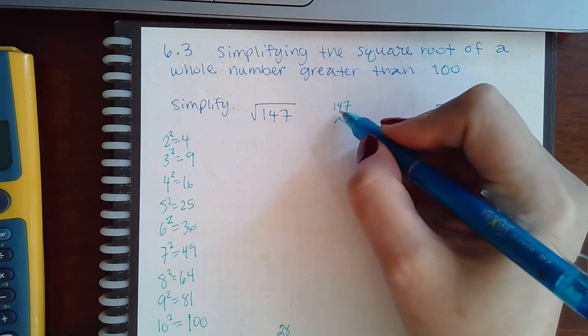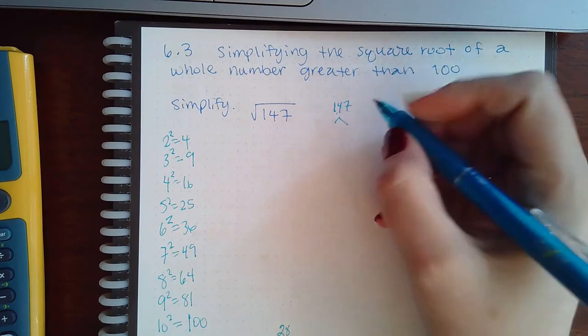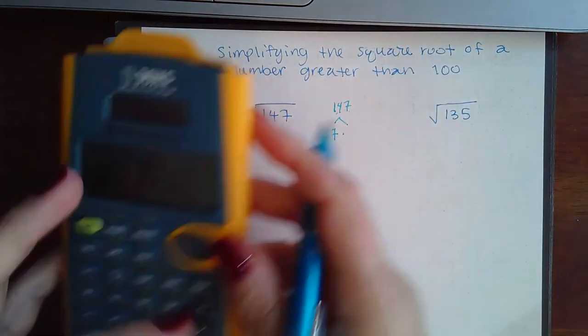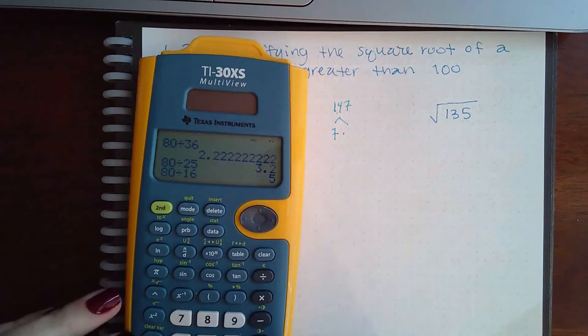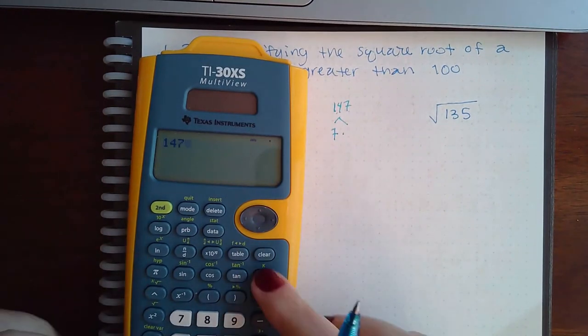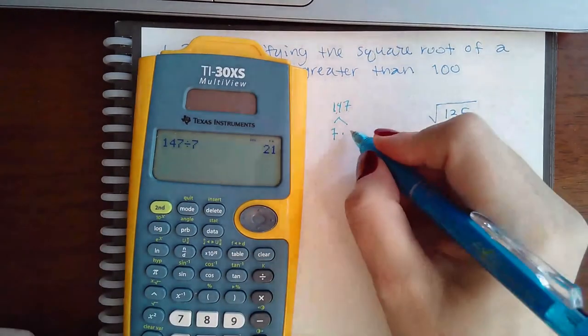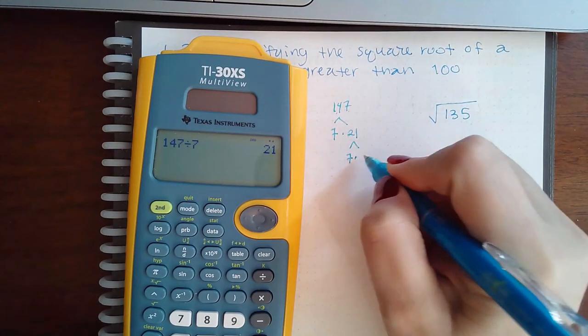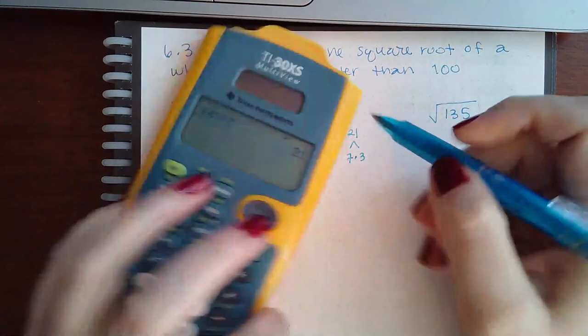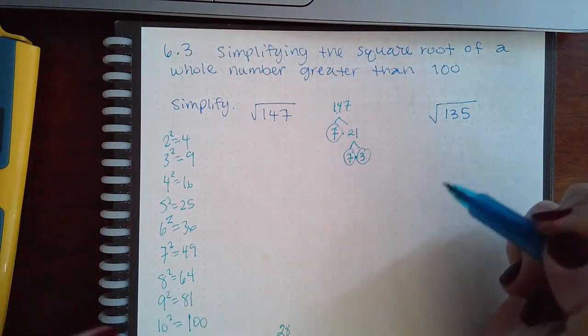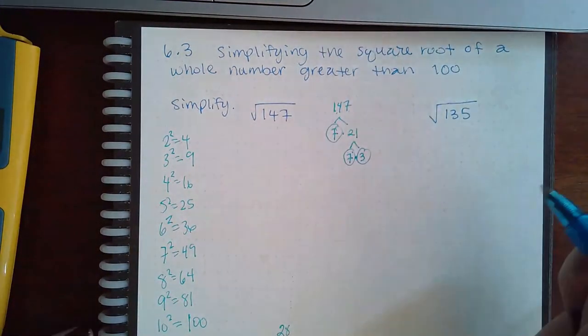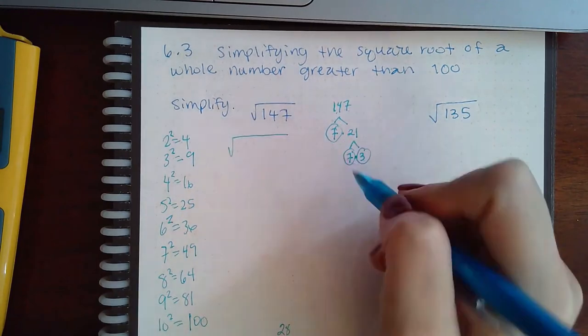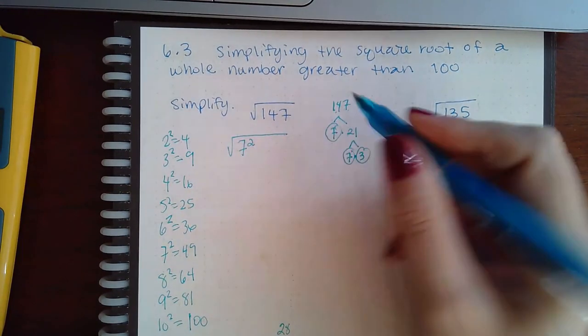So I'm going to go ahead and break up 147 into its prime factorization. I noticed that I have a 14 and a 7, so to me that means 7 will probably divide evenly into it. Let's see, 147 divided by 7, I get 21. 21 I know can be broken up as 7 times 3, and so 7 is a prime number and 3 is a prime number, so I'm done breaking it up.